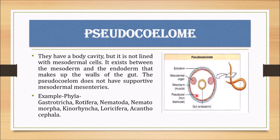Examples of pseudocoelomates include rotifera, nematoda, gastrotricha, kinorhyncha, loricifera, and acanthocephala. These are various phyla that we can see in the pseudocoelomate group.